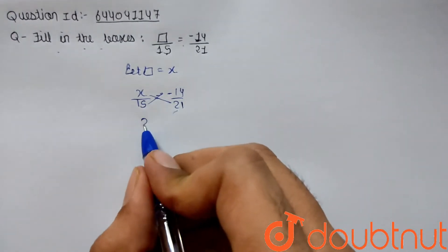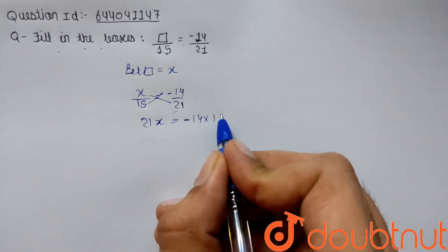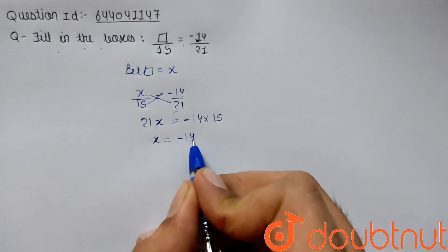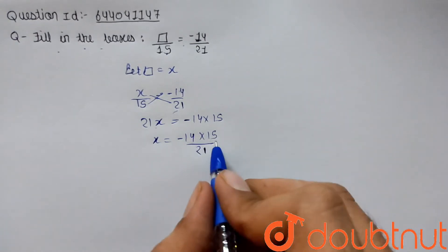We are doing cross multiplication. This will be 21x and this will be minus 14 into 15. So this will be minus 14 into 15 divided by 21.